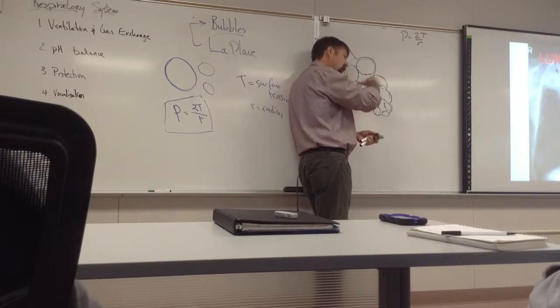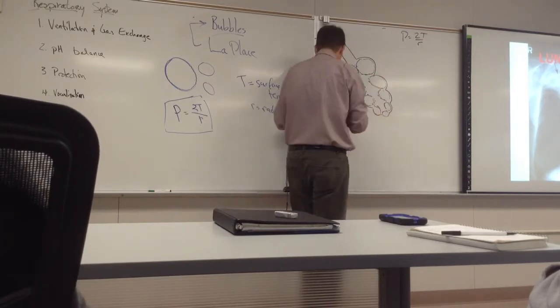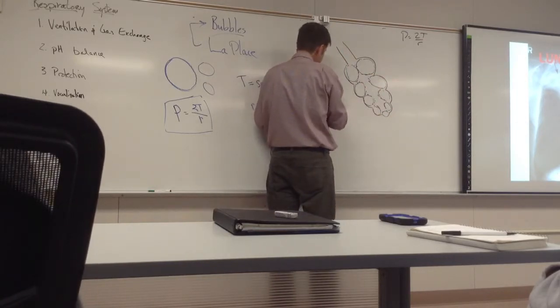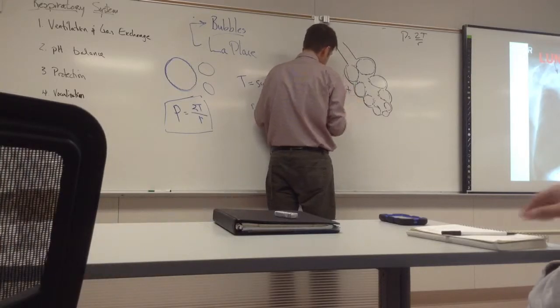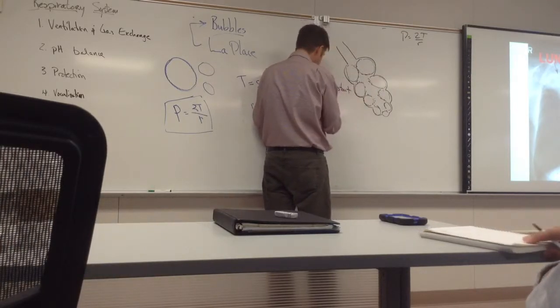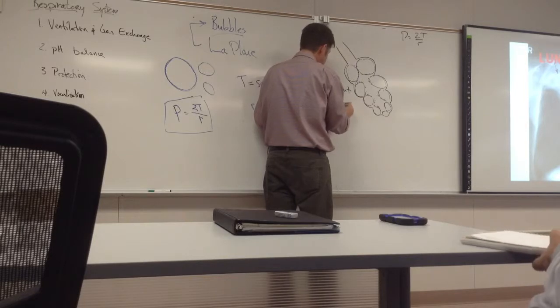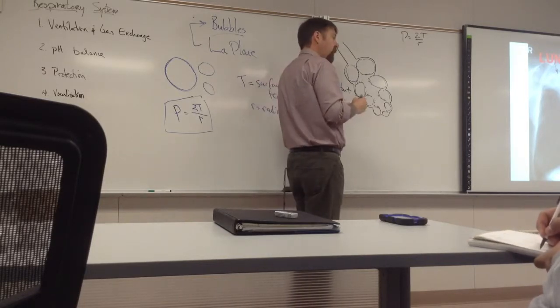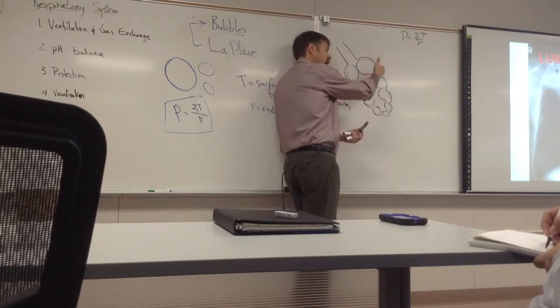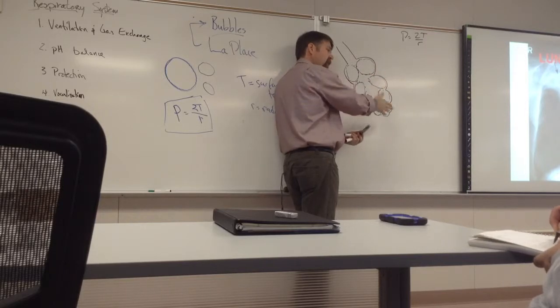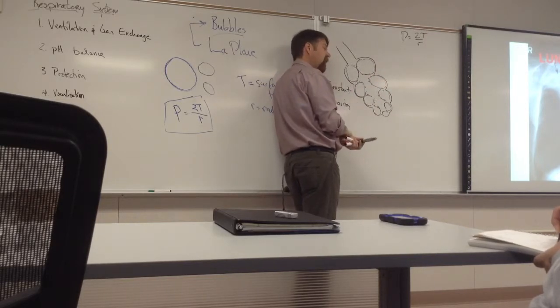So assuming that surface tension doesn't change, if surface tension is constant, we know that the radius is varying here, that's just due to their structure. Can you tell me, is there differences in pressures here? Where's the highest pressure going to be?